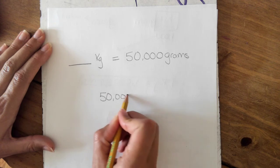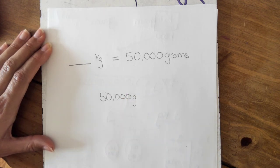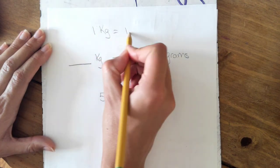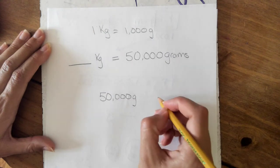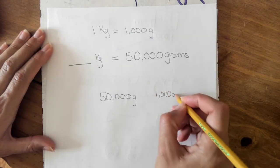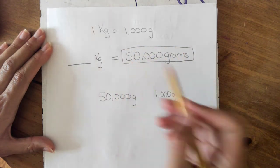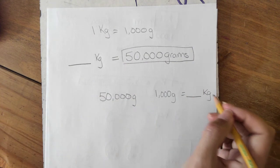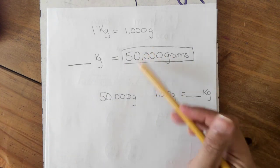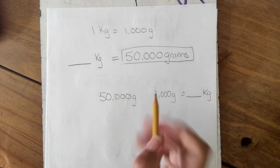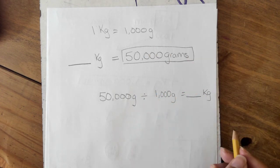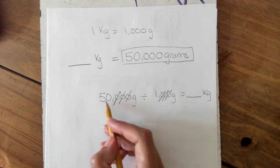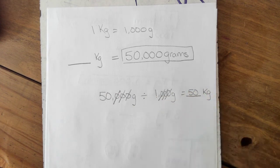So I'm going to take what we know: we know we have 50,000 grams. And our key at the top says one kilogram equals one thousand grams. So I have this 50,000 grams—since this is my total number of grams—and I need to figure out how many kilograms that is. I'm going to take this and divide it up into my equal groups. So I have 50,000 divided by one thousand. I cross off my zeros and I get 50 divided by one, which is 50.